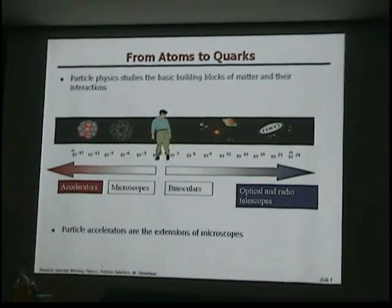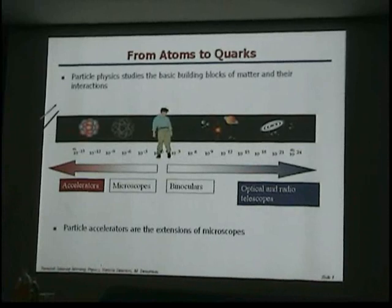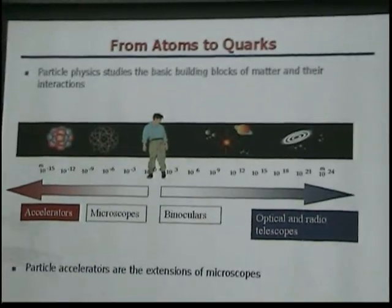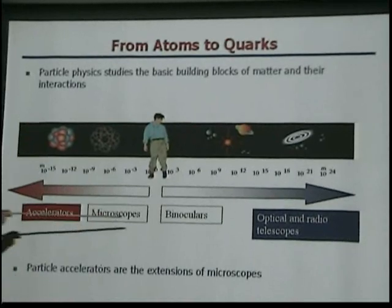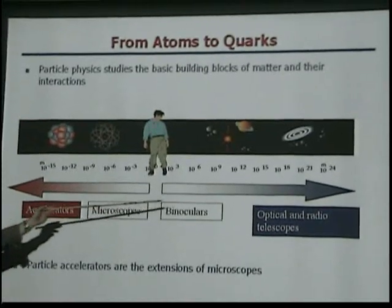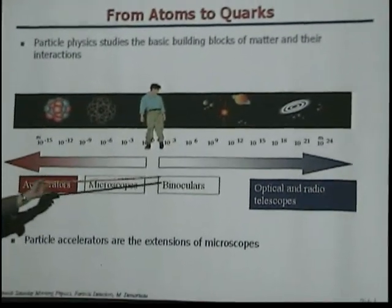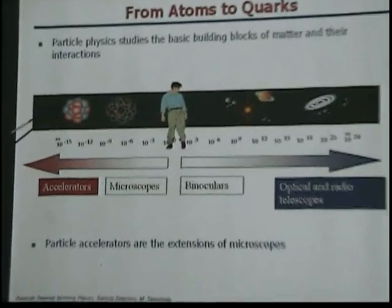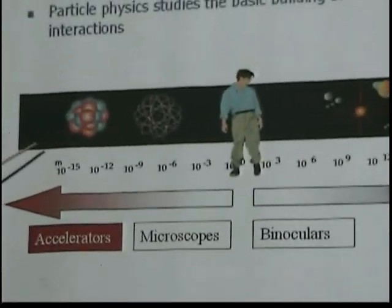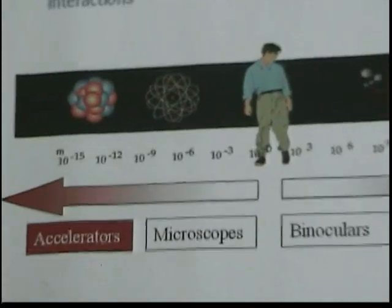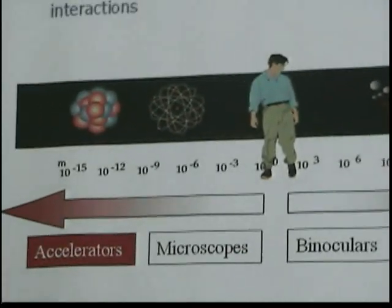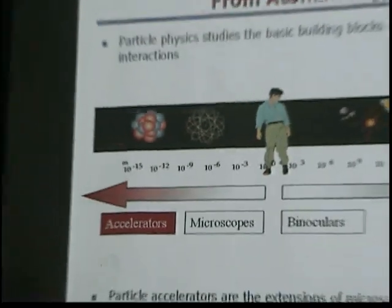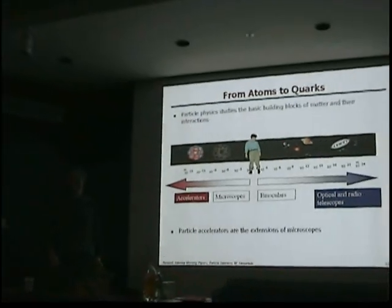So what is this all about? What we do here is we study particle physics — we study the basic building blocks of matter and their interactions. In some sense we go the opposite way of the binoculars. Particle accelerators probe the smallest distances, and due to particle-wave duality, the higher the energy, the smaller the wavelength, so the more details you can see.